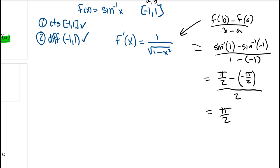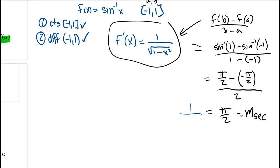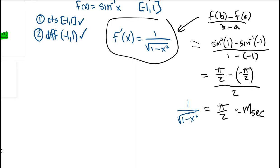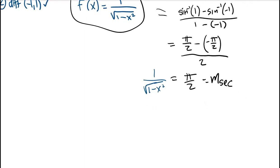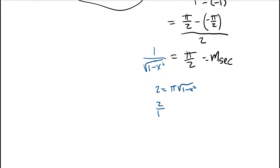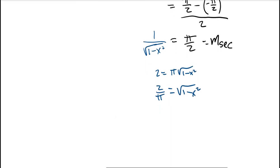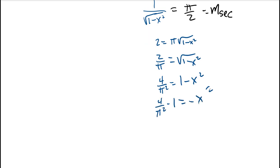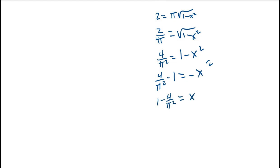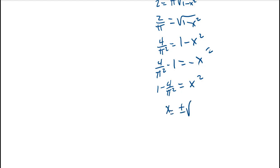Now we set the derivative equal to the slope of the secant line: 1 over the square root of 1 minus x squared equals π/2. Cross-multiplying gives 2 = π times the square root of 1 minus x squared. Dividing gives 2/π equals the square root of 1 minus x squared. Squaring both sides: 4/π² = 1 minus x squared. Rearranging: x squared = 1 minus 4/π², so x equals plus or minus the square root of 1 minus 4 over π squared.